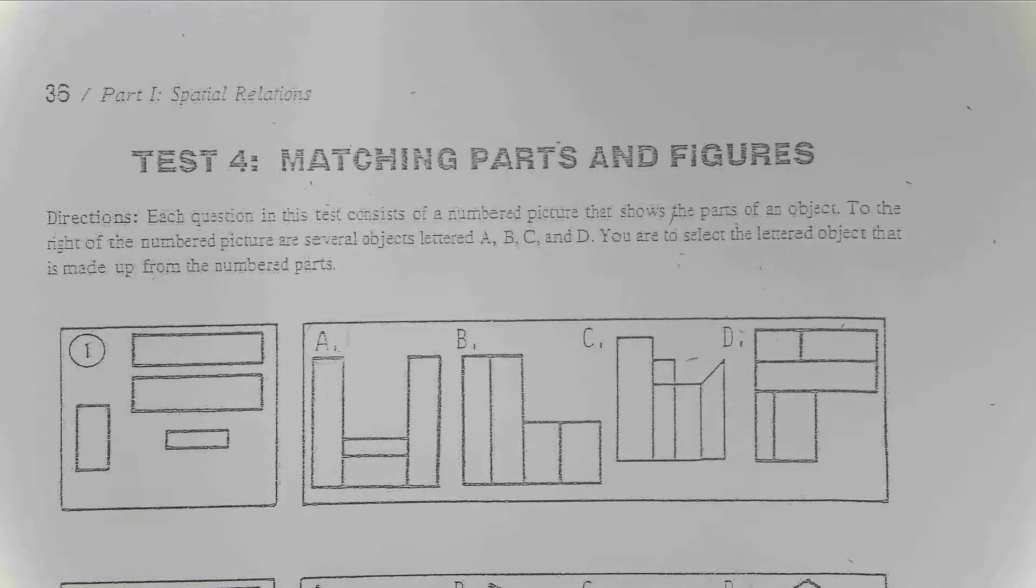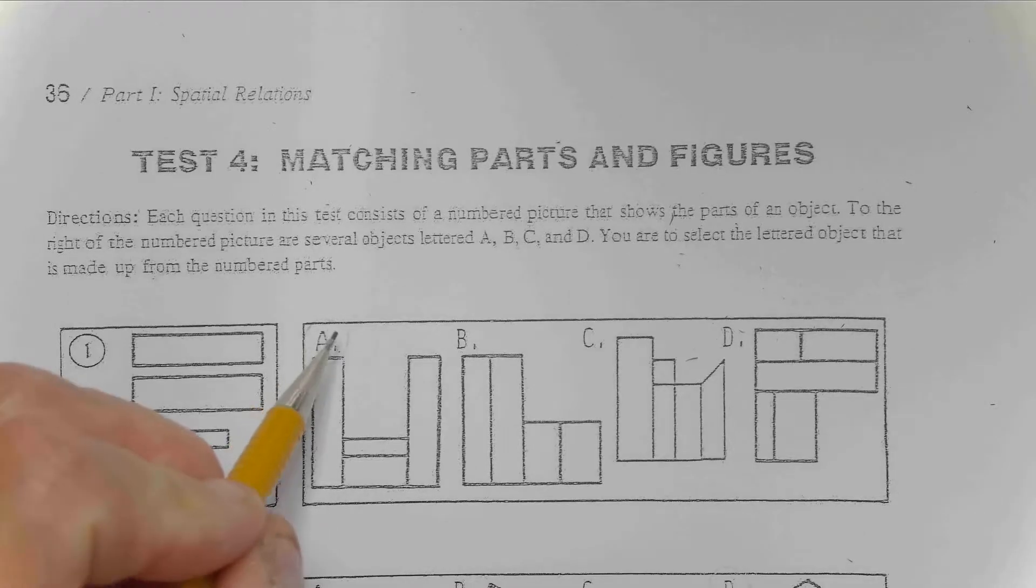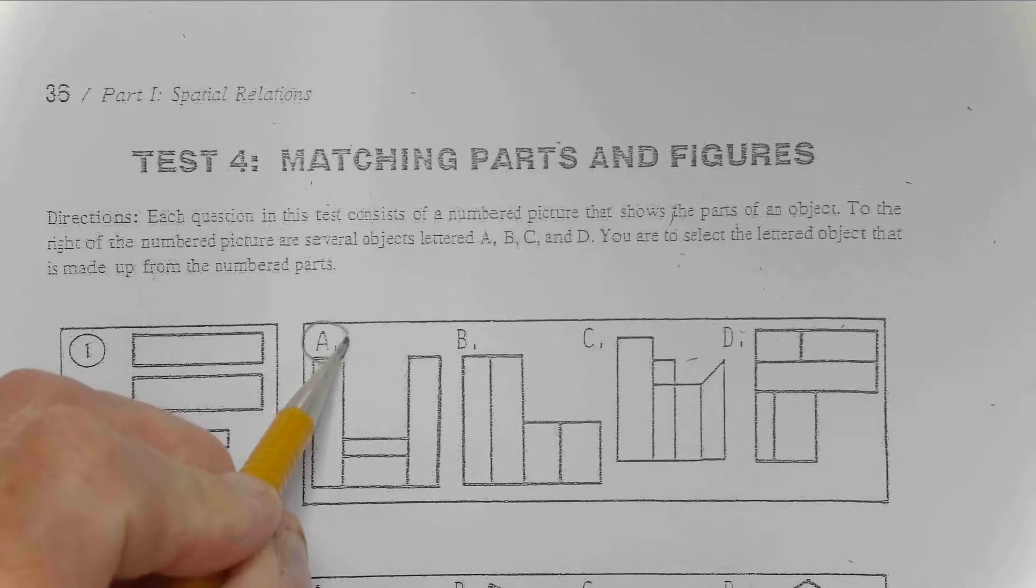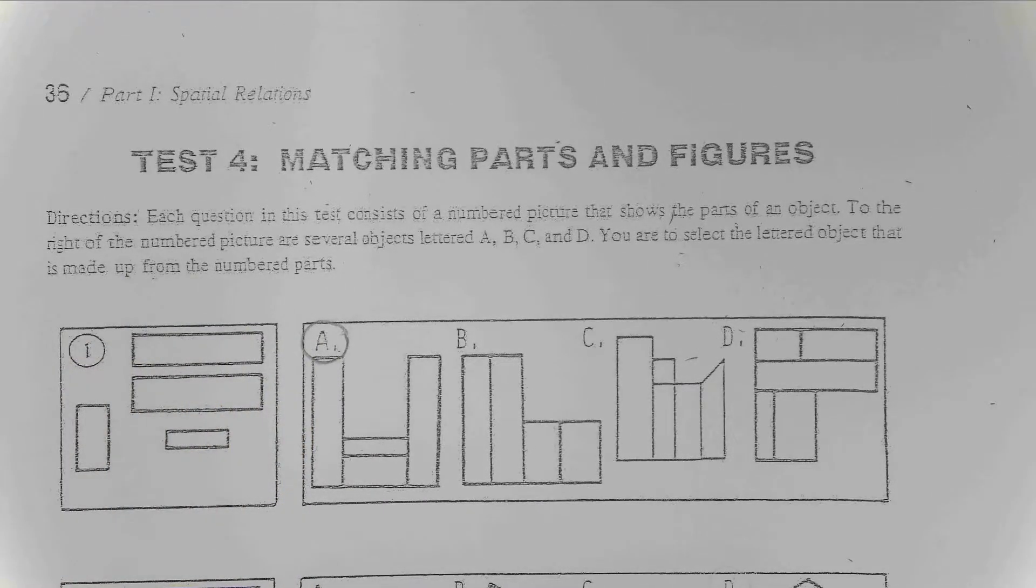So, number one, we've got some pieces there and they are going to end up being A through D, one of them. So, which is it? As you're working this, I'm going to give you one. It's letter A. If you look closely, those four pieces are the same size, same shape, they make that object.